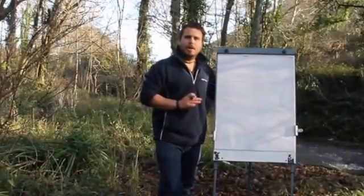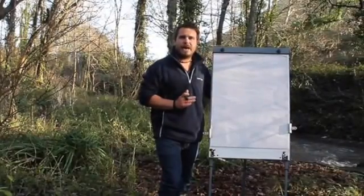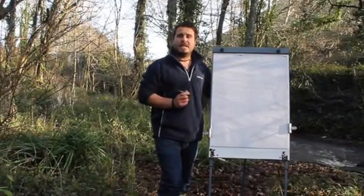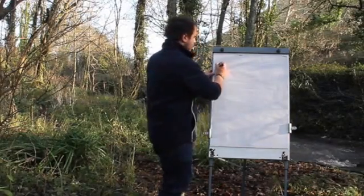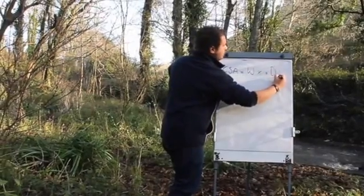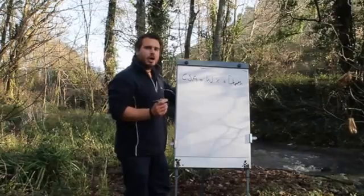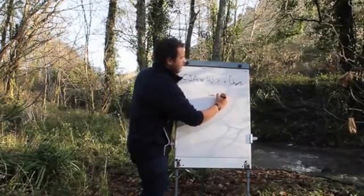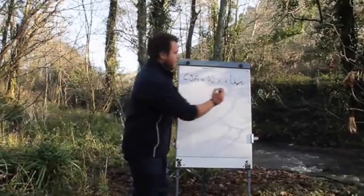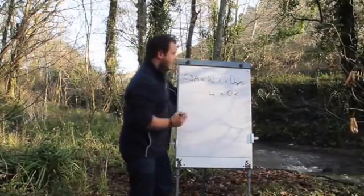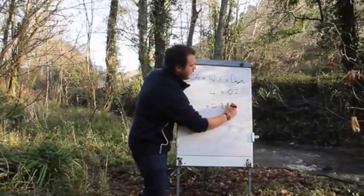Now that you've got your measurements done, the next step is to work out some calculations. The first calculation is your cross sectional area. For your cross sectional area, you multiply your width by your mean depth. For our calculations, we got a width of four meters and our average depth worked out at 0.2 meters, giving us a cross sectional area of 0.8 meters squared.